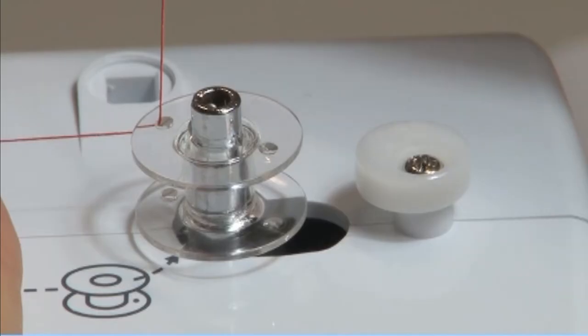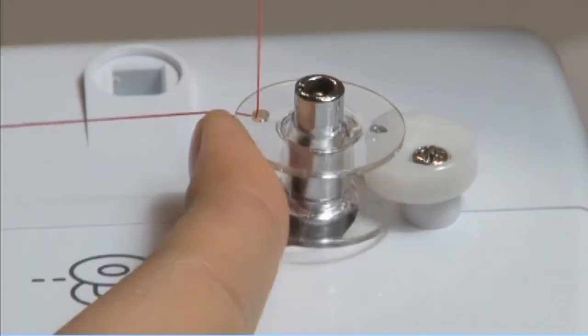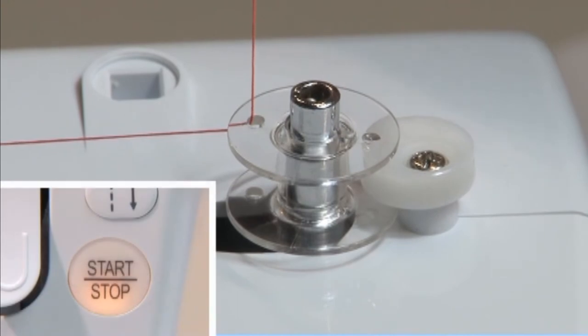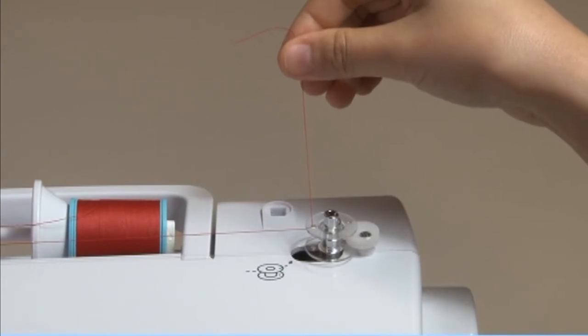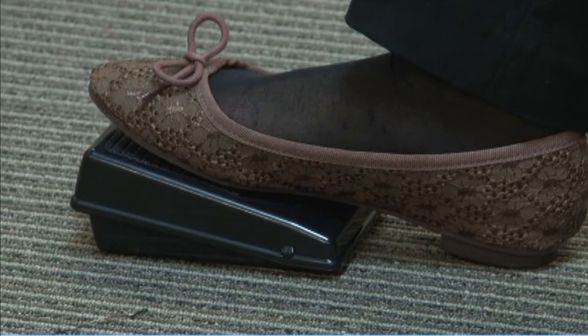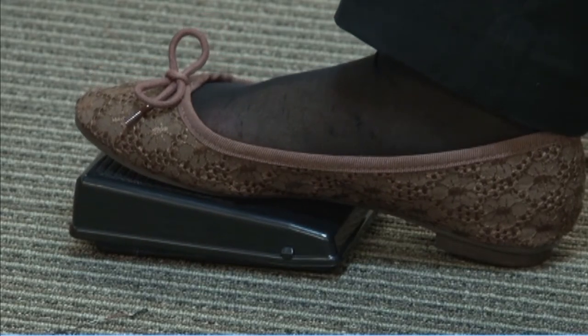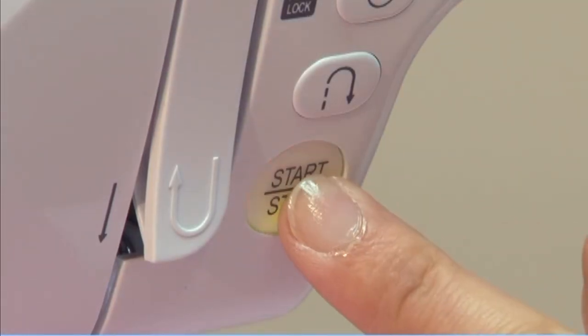Push the bobbin to the right. When the bobbin winder spindle is pushed to the right, the start-stop button turns orange. Hold the thread tail securely in one hand. Press on the foot control or the start-stop button to start winding the bobbin.